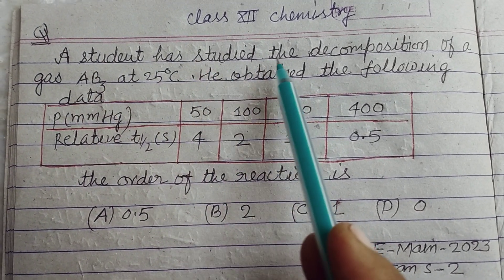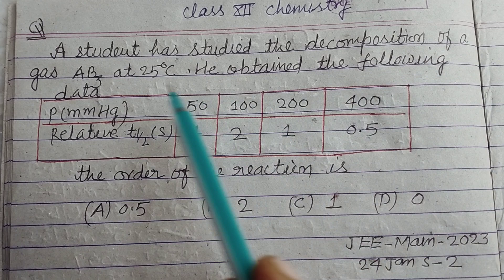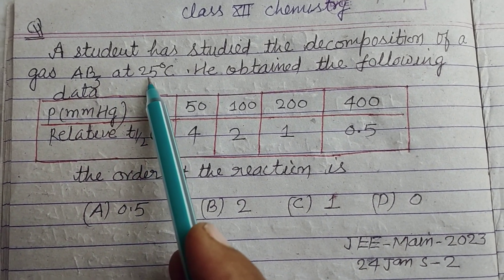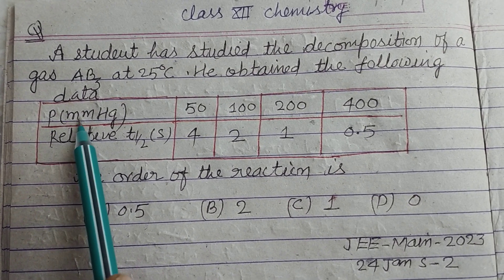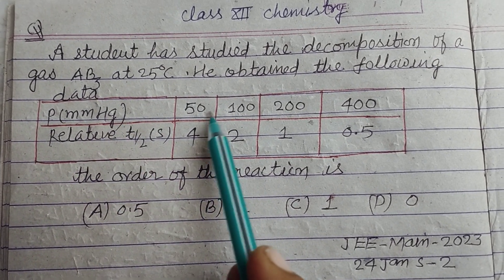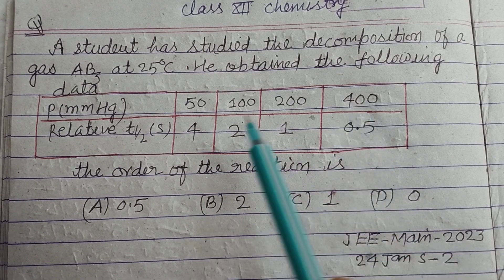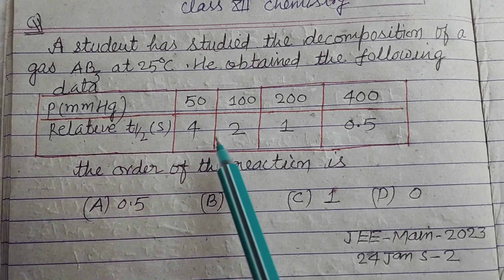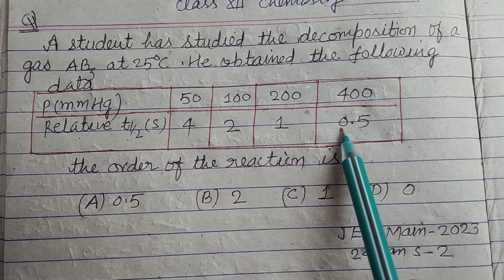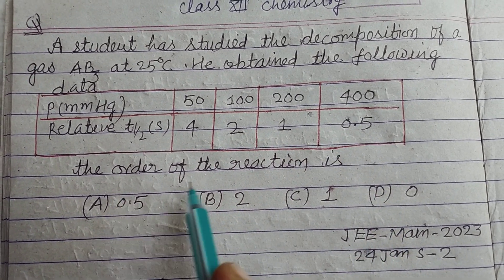A student has studied the decomposition of a gas AB3 at 25 degrees centigrade. He obtained the following data: pressure in millimeters of Hg is given 50, 100, 200, 400. Relative half-life in seconds is given 4, 2, 1, 0.5. The order of the reaction is?